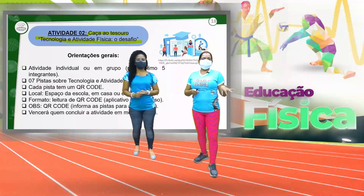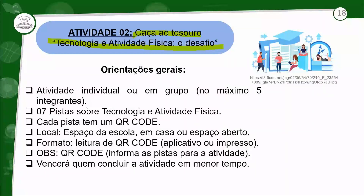A gente pode utilizar de diversas formas. A orientação geral: você vai trabalhar individual ou em grupo, no máximo cinco integrantes. Nós vamos utilizar sete pistas — a orientação da atividade são sete pistas, e cada pista tem um QR Code. Você pode utilizar o espaço da escola. Essa questão do espaço é importante saber antes de planejar a atividade, porque o espaço vai ser onde você vai colocar as pistas. Você precisa ter esse reconhecimento prévio.